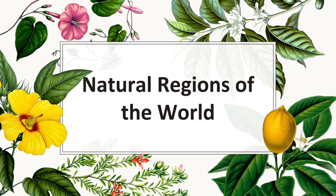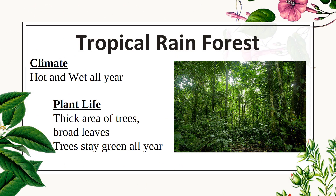This next slide deck is going to walk us through the natural regions of the world. First one is the tropical rainforest, which has a climate that is hot and wet all year. Think about the plant life — the thick area of trees with broad leaves, and the trees stay green all year.